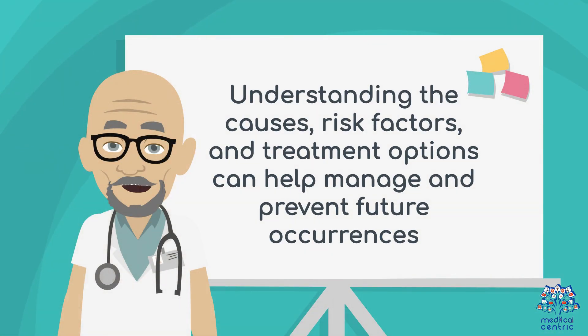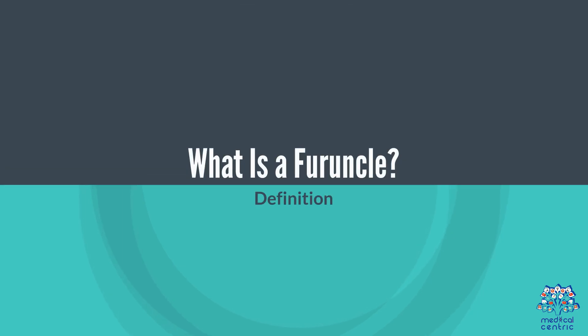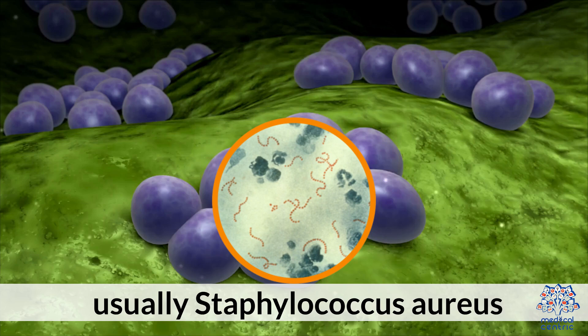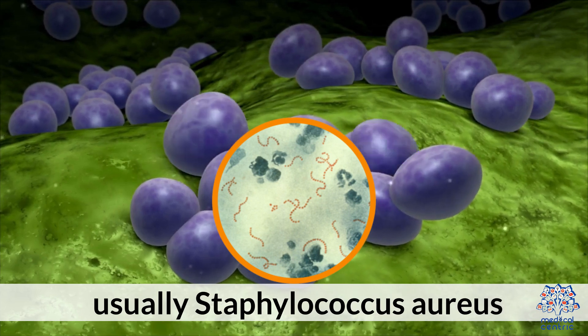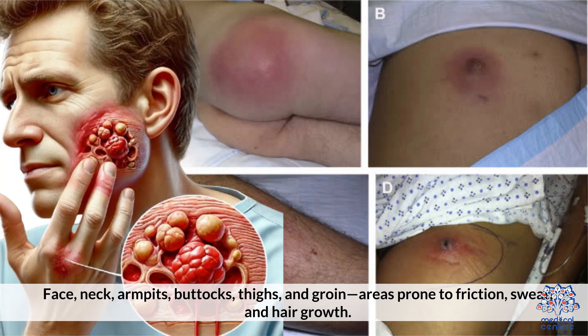Understanding the causes, risk factors, and treatment options can help manage and prevent future occurrences. A furuncle is defined as a deep, pus-filled lump that forms when a hair follicle becomes infected by bacteria, usually Staphylococcus aureus. Common locations include the face, neck, armpits, buttocks, thighs, and groin — areas prone to friction, sweat, and hair growth.